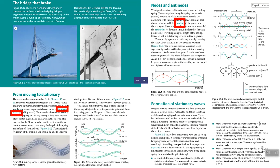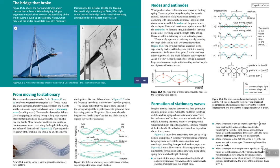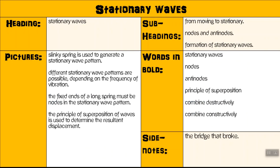Words in bold include: stationary waves, nodes, antinodes, constructively, principle of superpositioning, destructively — write them down. And in the side notes, if you look at the introduction part, it speaks about the Tacoma Narrows bridge in Washington and how it broke, so the side note is just highlighting the bridge that broke.